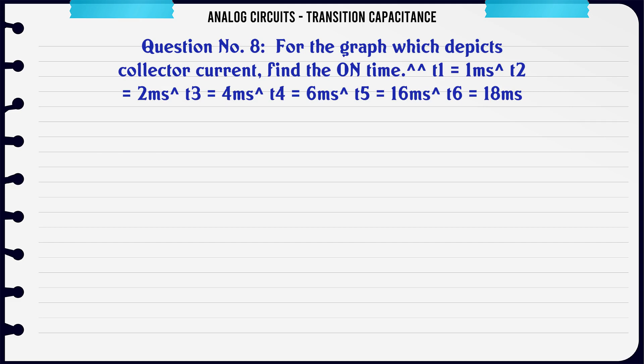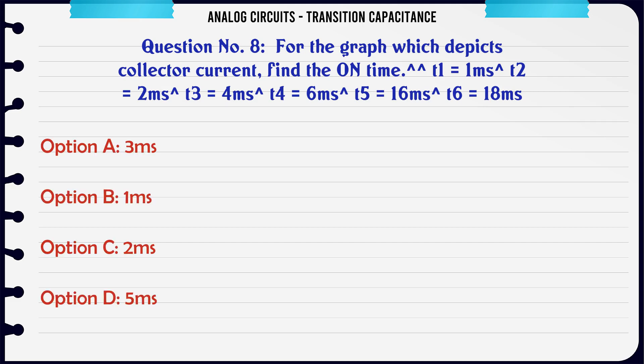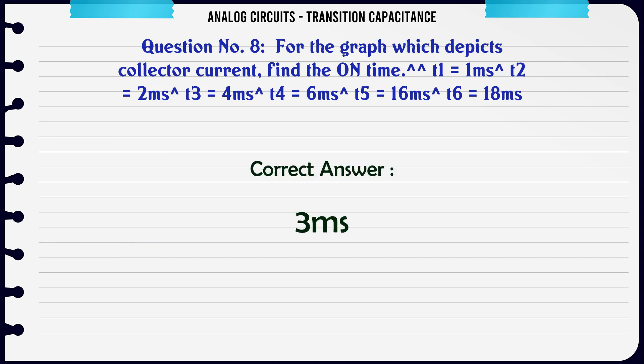For the graph which depicts collector current, find the on time. T1=1ms, T2=2ms, T3=4ms, T4=6ms, T5=16ms, T6=18ms. A: 3ms, B: 1ms, C: 2ms, D: 5ms. The correct answer is 3ms.